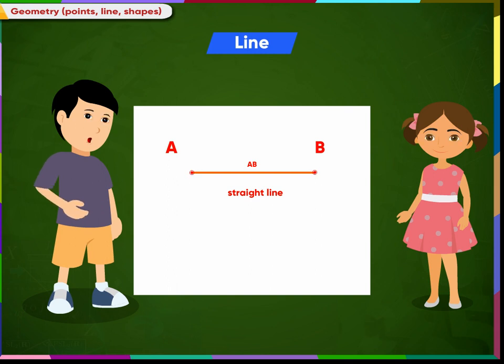So a line is a mark that joins two points. For example, this is a line. This is also a line. And this also is a line.